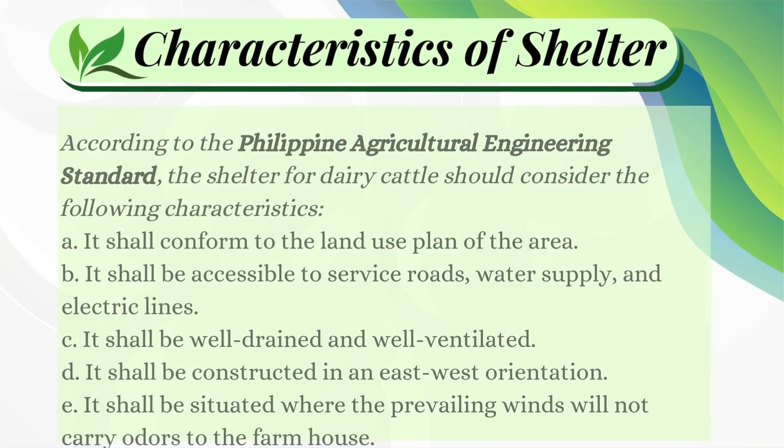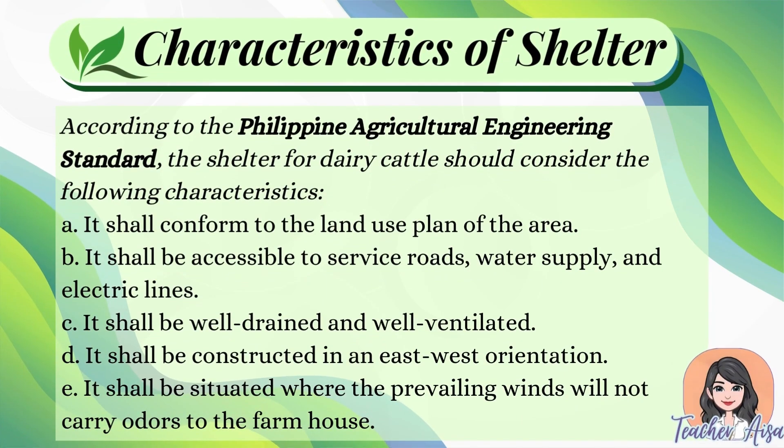According to the Philippine Agricultural Engineering Standard, the shelter for dairy cattle should consider the following characteristics: a) it shall conform to the land use plan of the area; b) it shall be accessible to service roads, water supply, and electric lines; c) it shall be well drained and well ventilated; d) it shall be constructed in an east-west orientation.